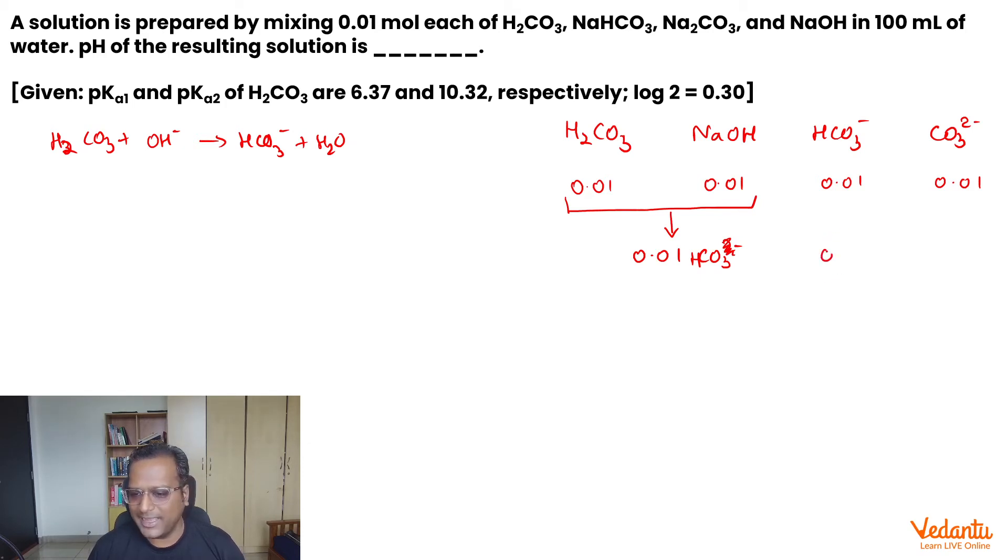And we already had HCO3 minus and CO3 2 minus present here. Can they further react with each other? Total HCO3 minus is 0.02. Total carbonate remaining finally is 0.01.